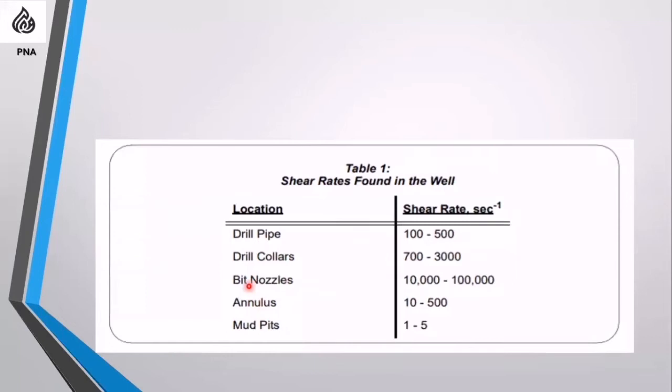In the annulus, shear rates are from 10 to 500; in solid control equipment, 100 to 600; and in mud tanks, from 1 to 5. So readings at 3, 6, 100, 200, 300, and 600 simulate the shear stress and shear rates for mud inside the hole and in mud tanks.